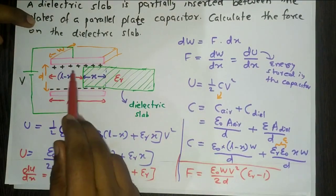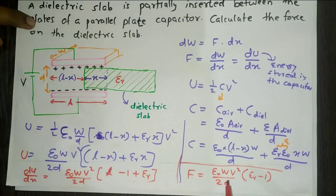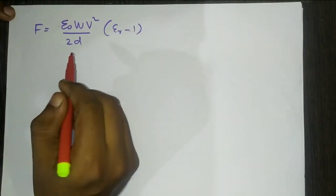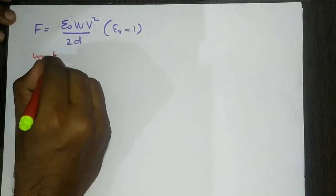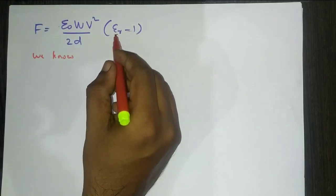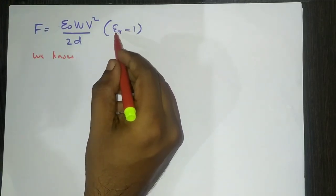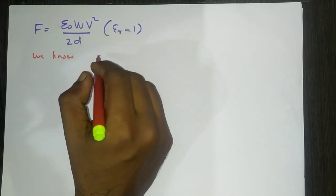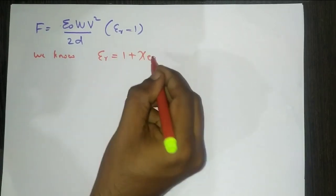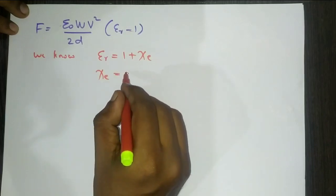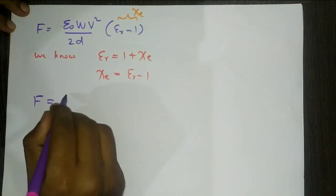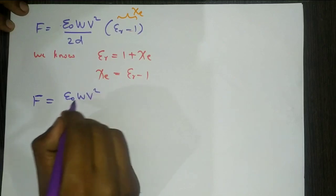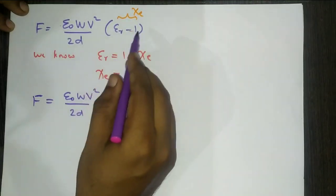This is the force experienced by the dielectric material having dielectric constant εr when placed in a capacitor connected to a constant potential V. We can make a substitution: we know the relation between electric susceptibility χe and the dielectric constant — εr = 1 + χe, so χe = εr - 1. Therefore the force expression becomes F = ε₀·W·V²/(2d) × χe.